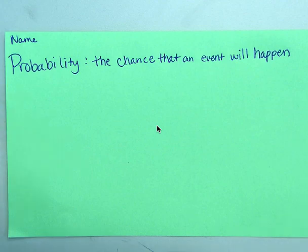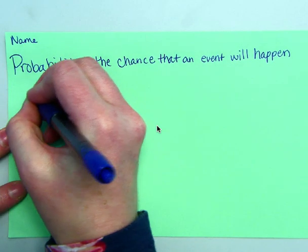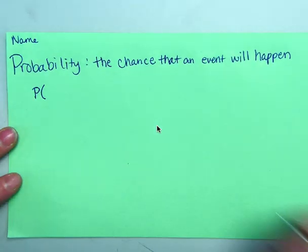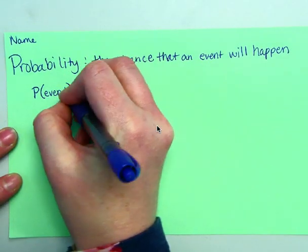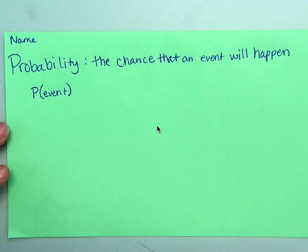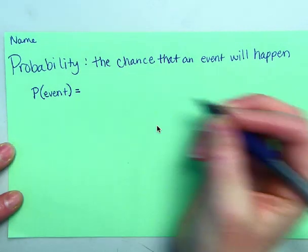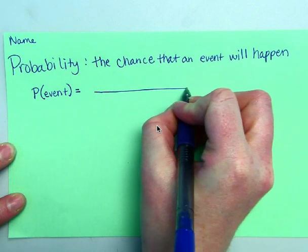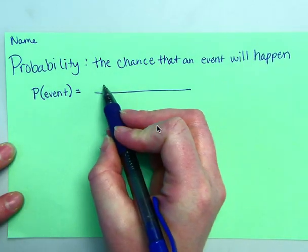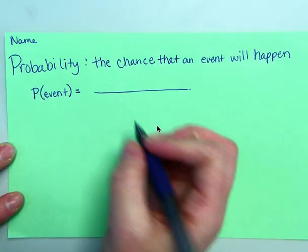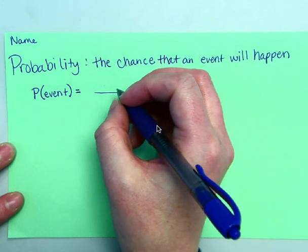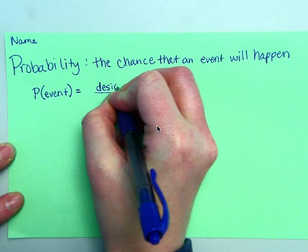So chance also means likelihood of an event happening. And in math we write it as P event. So whatever the event is, whether it is rolling a dice, picking a card from a deck of cards, picking a marble out of a jar, M&Ms out of a bag, certain color, so probability of red. So we would write that as a fraction. Your fraction will be a number on top and a number on bottom.